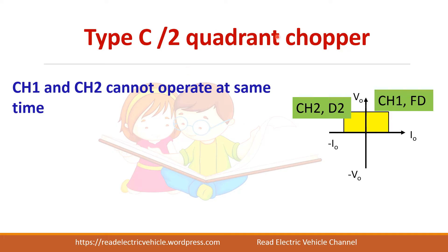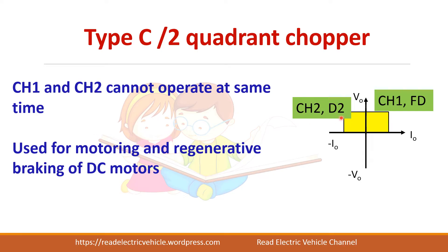Both first and second quadrant operation can be achieved by changing the operating condition of the switches. For first quadrant operation, Chopper 1 and the freewheeling diode are used; for second quadrant operation, Chopper 2 and D2 are used. It must be ensured that both choppers are never turned on at the same time, as this would short the supply voltage. This type of chopper is used for motoring and regenerative braking of DC motors.